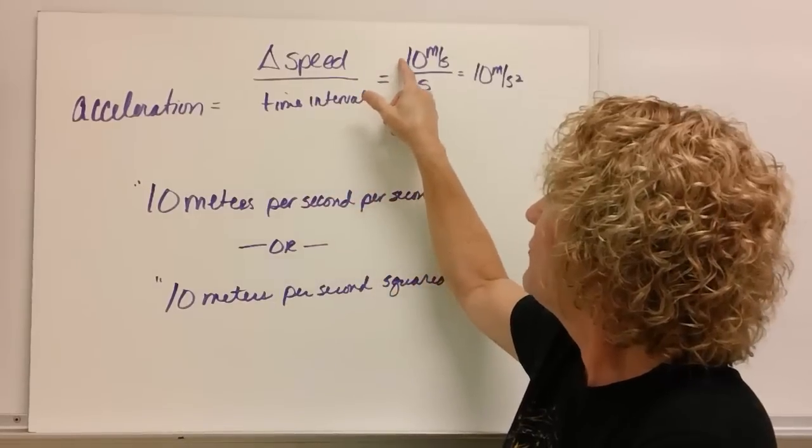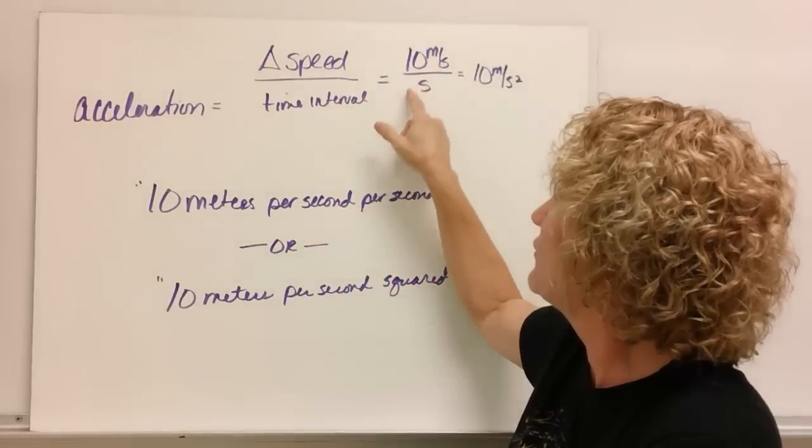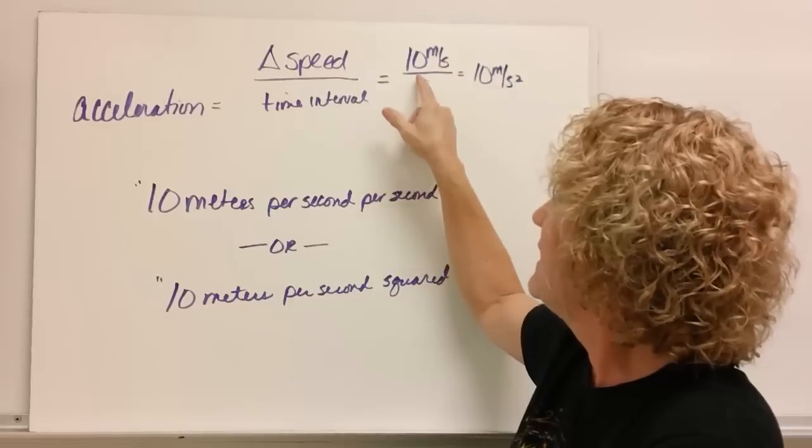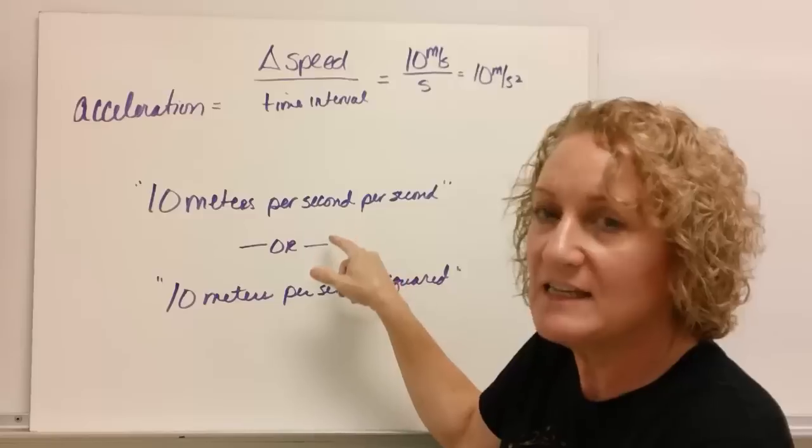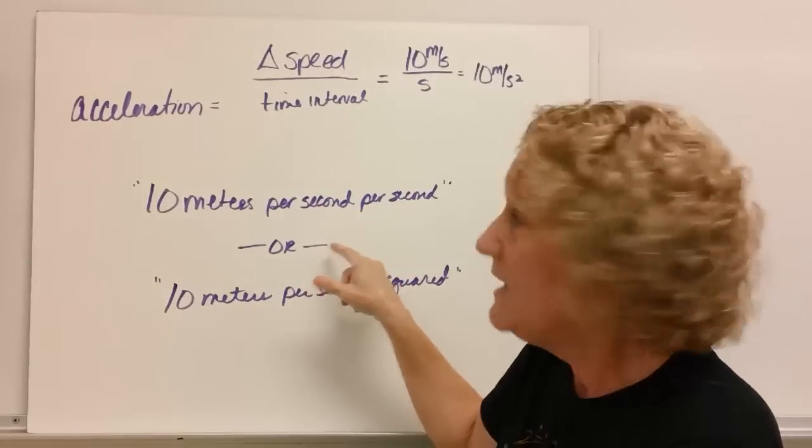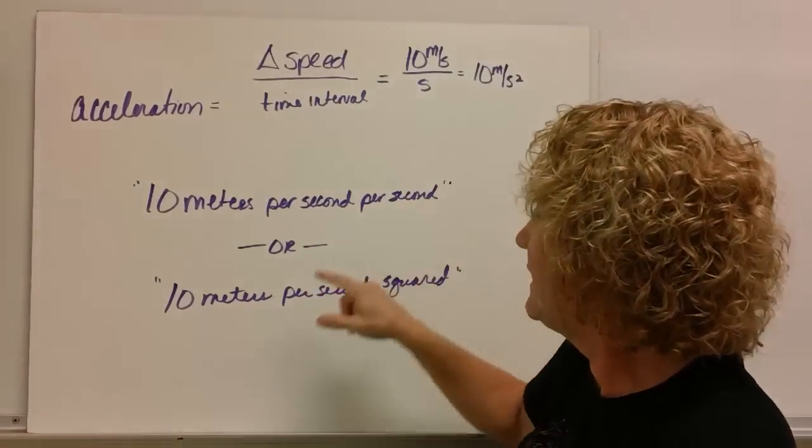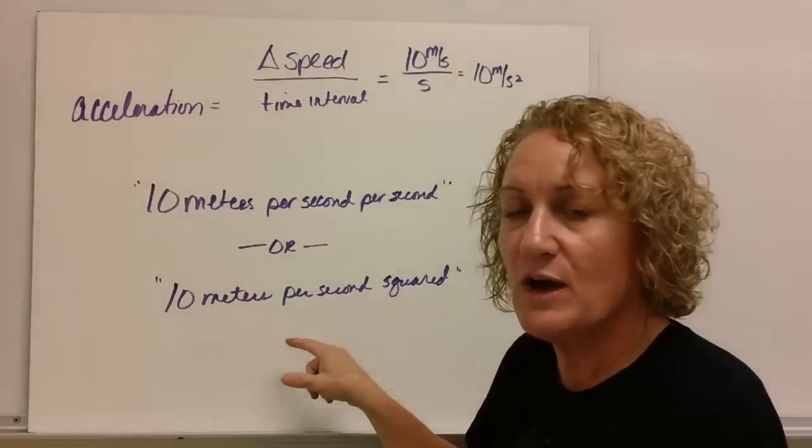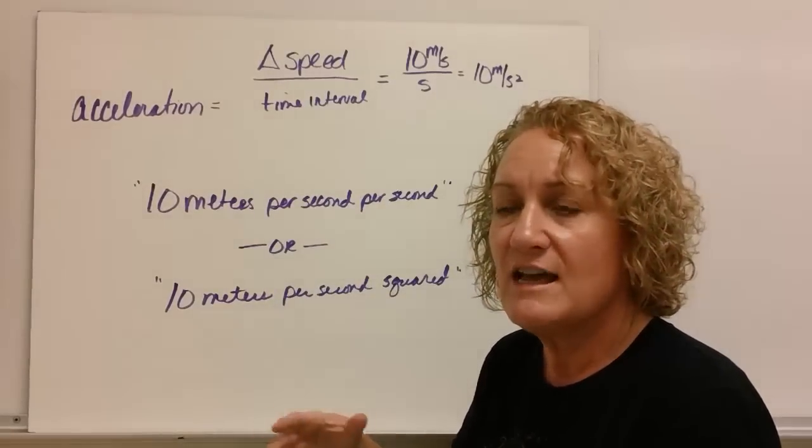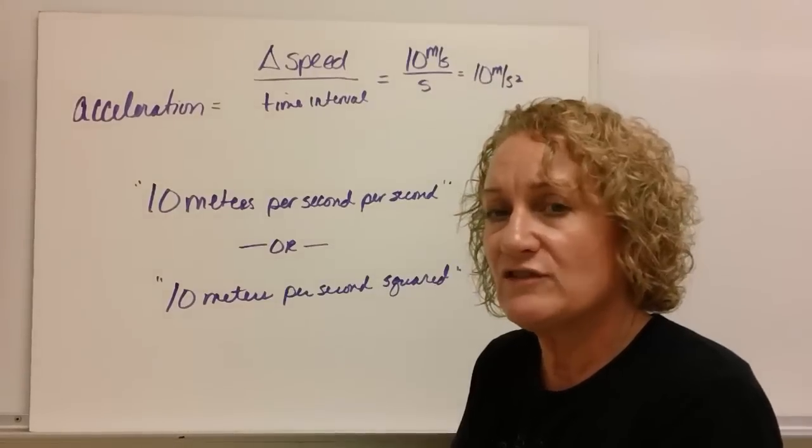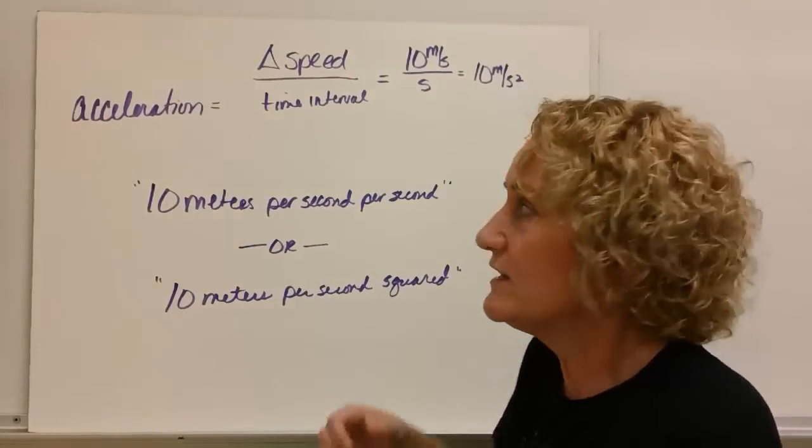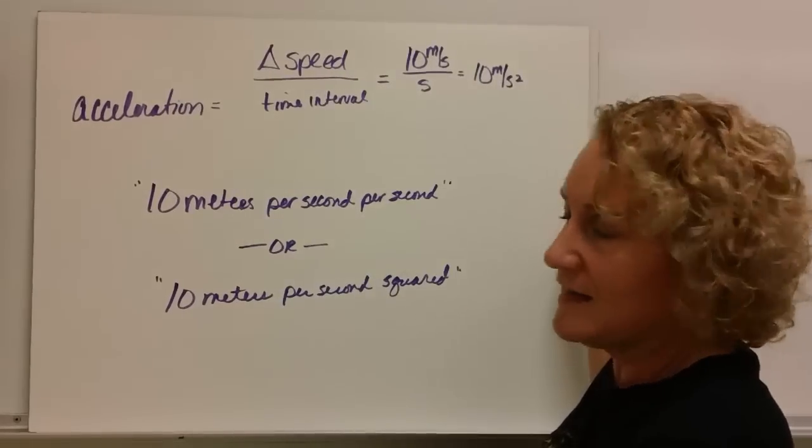We said that it went 10 meters per second faster for every one second. This is read 10 meters per second per second. Yes, you say it twice. You may also write it like this and say 10 meters per second squared. And what you're saying is for every one second in time, it goes 10 meters per second faster than it was the previous second.